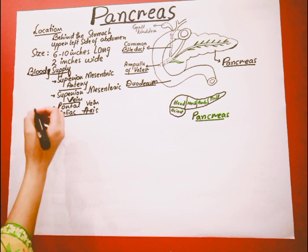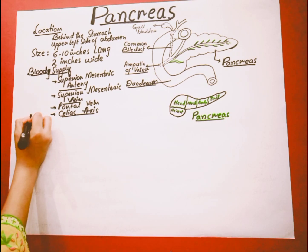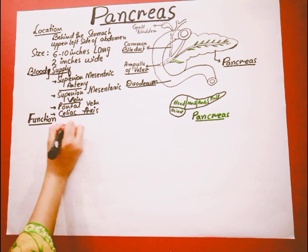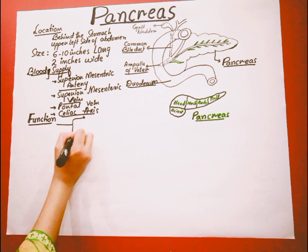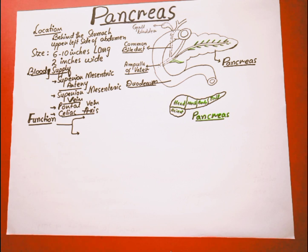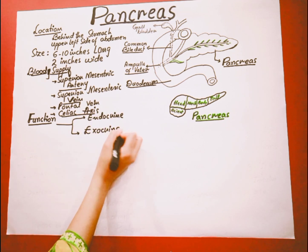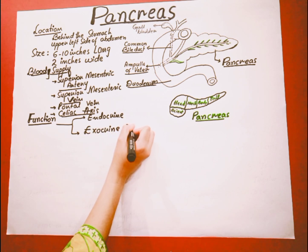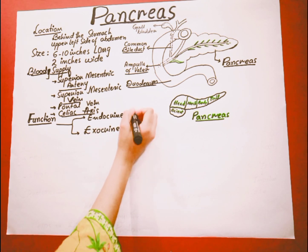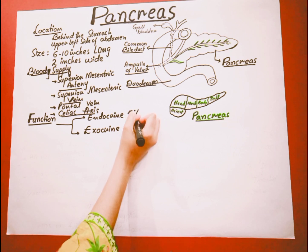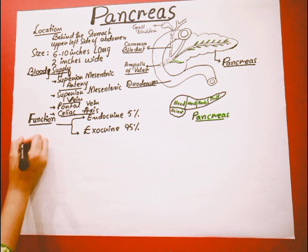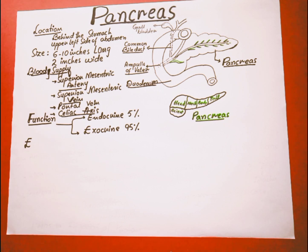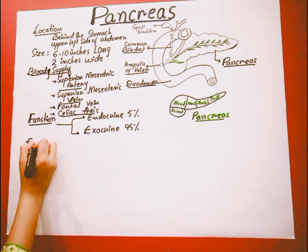Let's move to the function of the pancreas. The pancreas performs both endocrine and exocrine functions in our body. It contains 95 percent exocrine cells and only 5 percent endocrine cells. The exocrine function of the pancreas is to produce pancreatic juice, which contains certain enzymes.